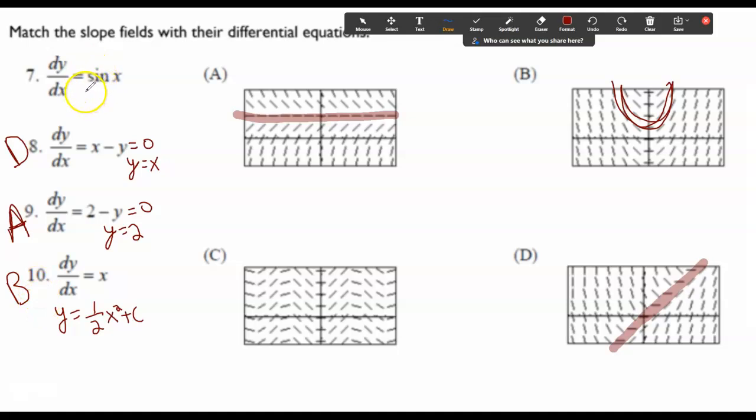The derivative of, or the integral of sine is negative cosine. So it looks like y equals negative cosine of x plus c, which would make sense for c.